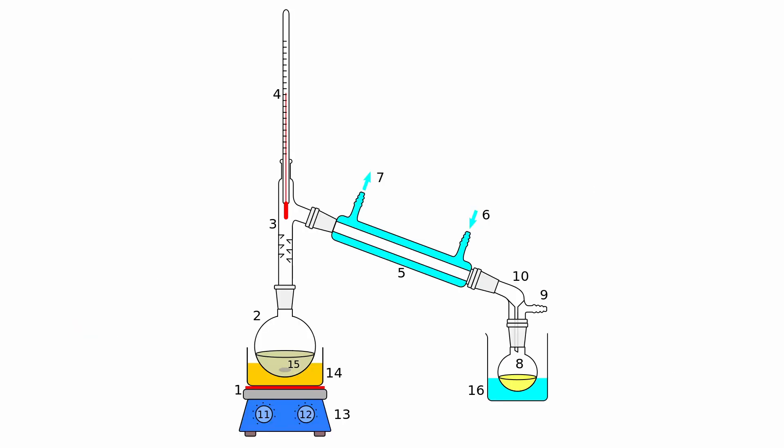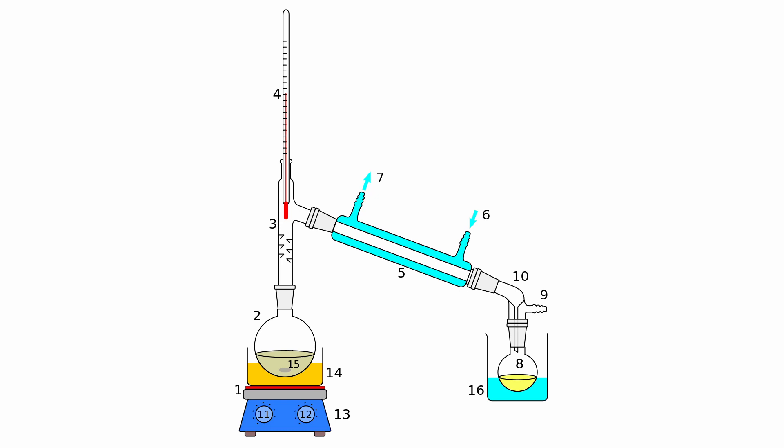I will be extracting the limonene from orange peels using a technique called steam distillation. Limonene boils at a pretty high temperature, but the boiling water vapor pressure makes it vaporize and co-distill with the water.